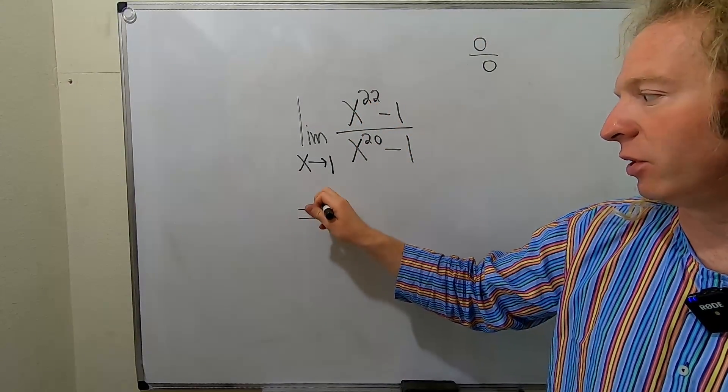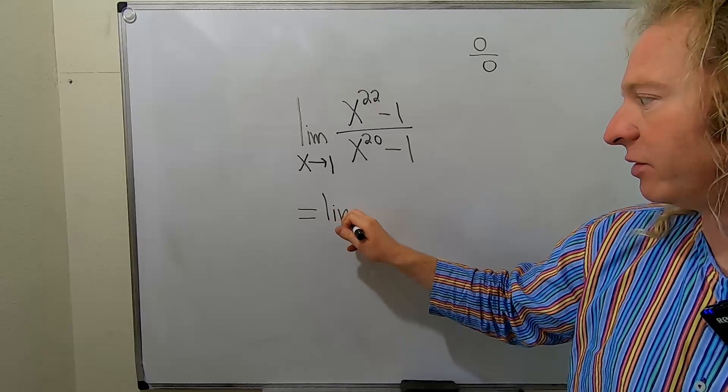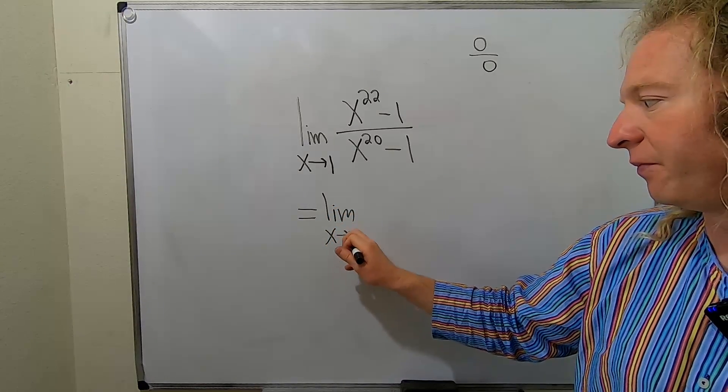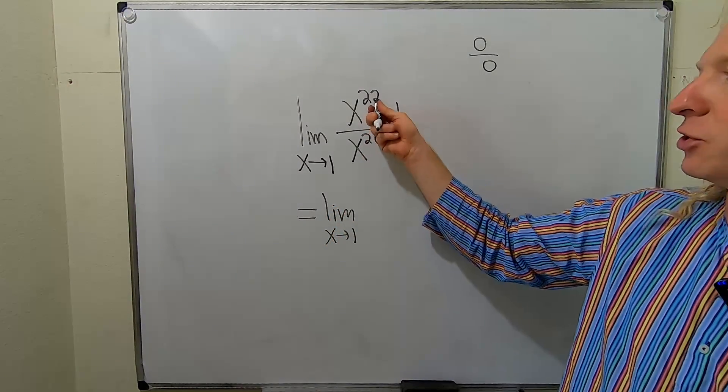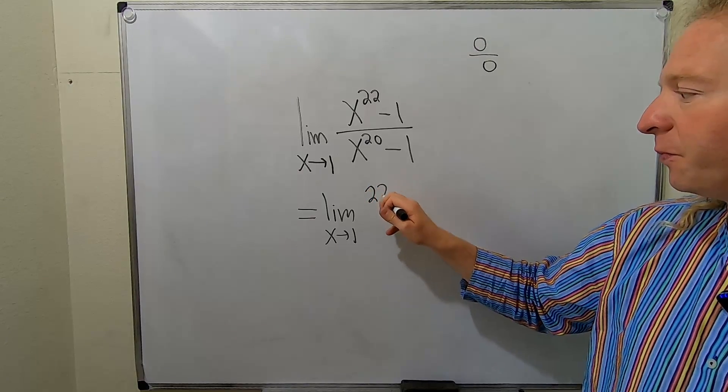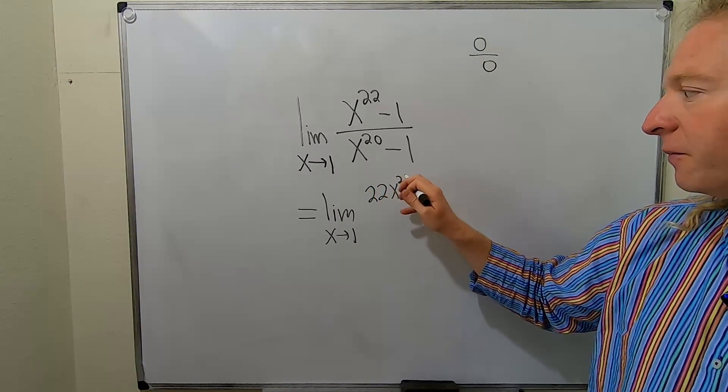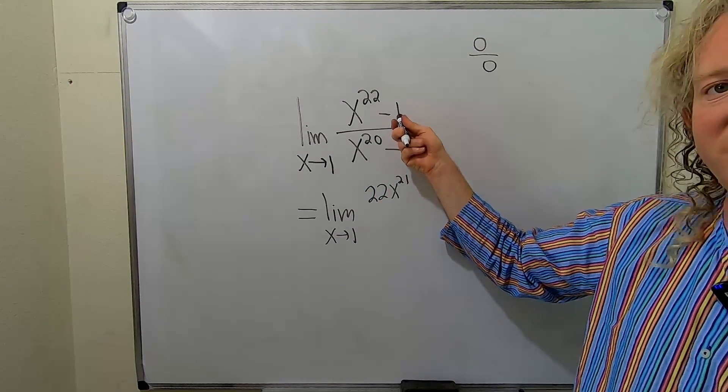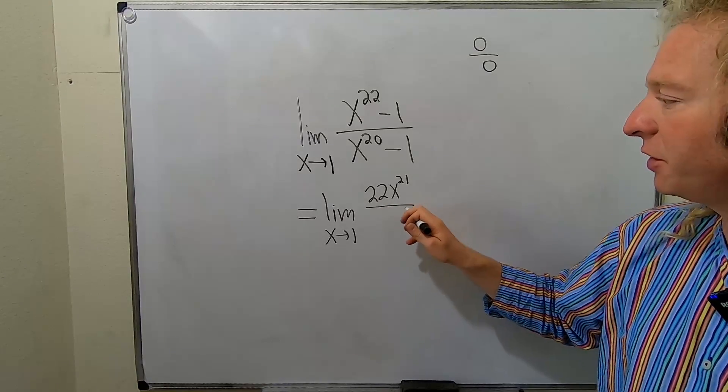So this is equal to, you still keep the limit sign. So limit x approaches 1. So the derivative here is just the power rule, so it'll be 22x to the 21. And this derivative here is 0, so it goes away. And then here would be 20.